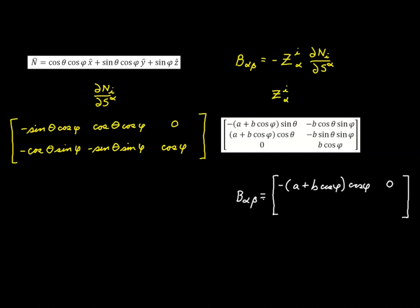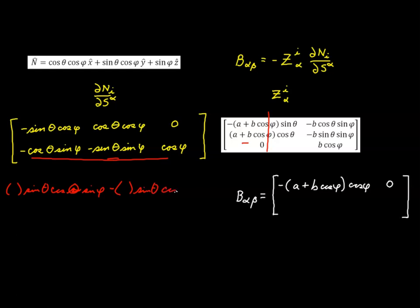Row 2, column 1: the first term is positive — the parenthetical expression times sine theta cosine theta sine phi — and the second term is negative the same expression times sine theta cosine theta sine phi, with the third term being zero. Again, two equal and opposite terms add to zero, giving zero in row 2, column 1.